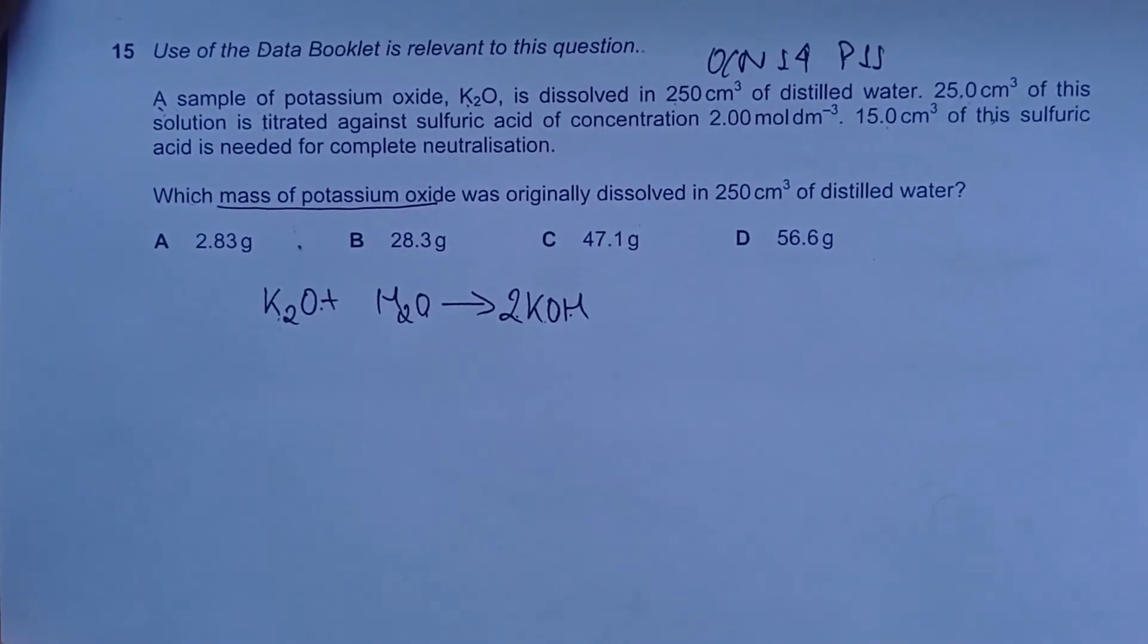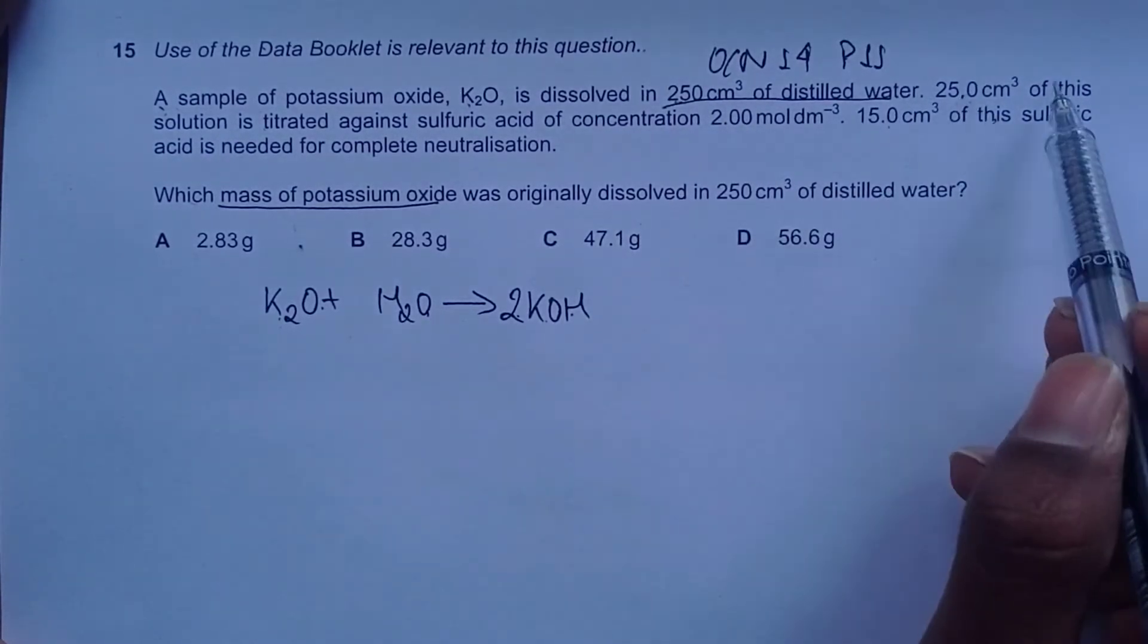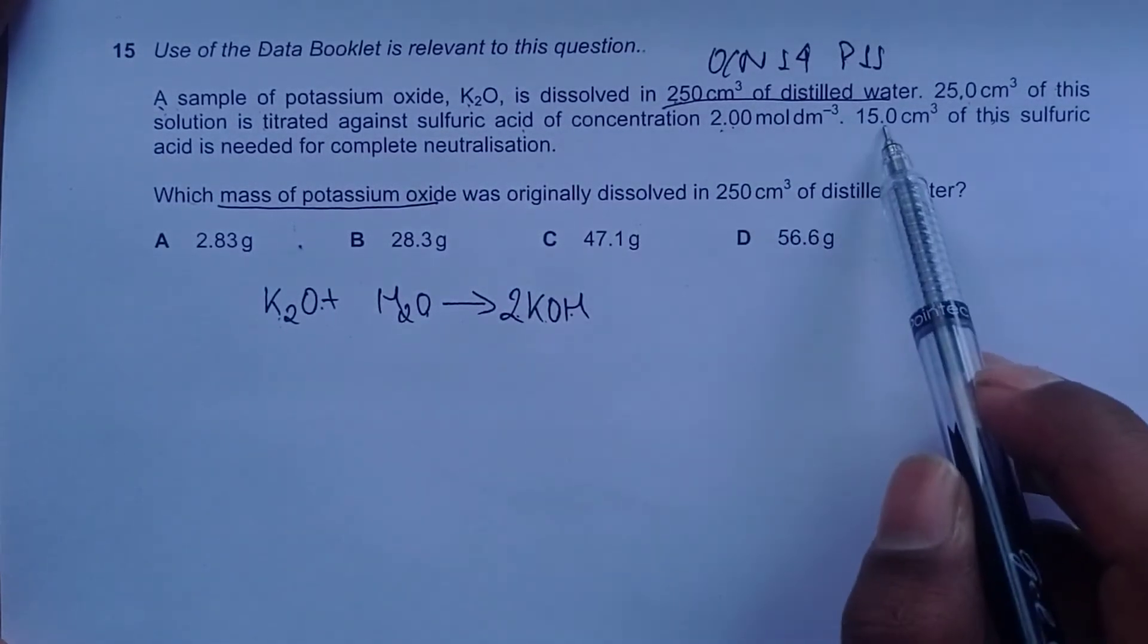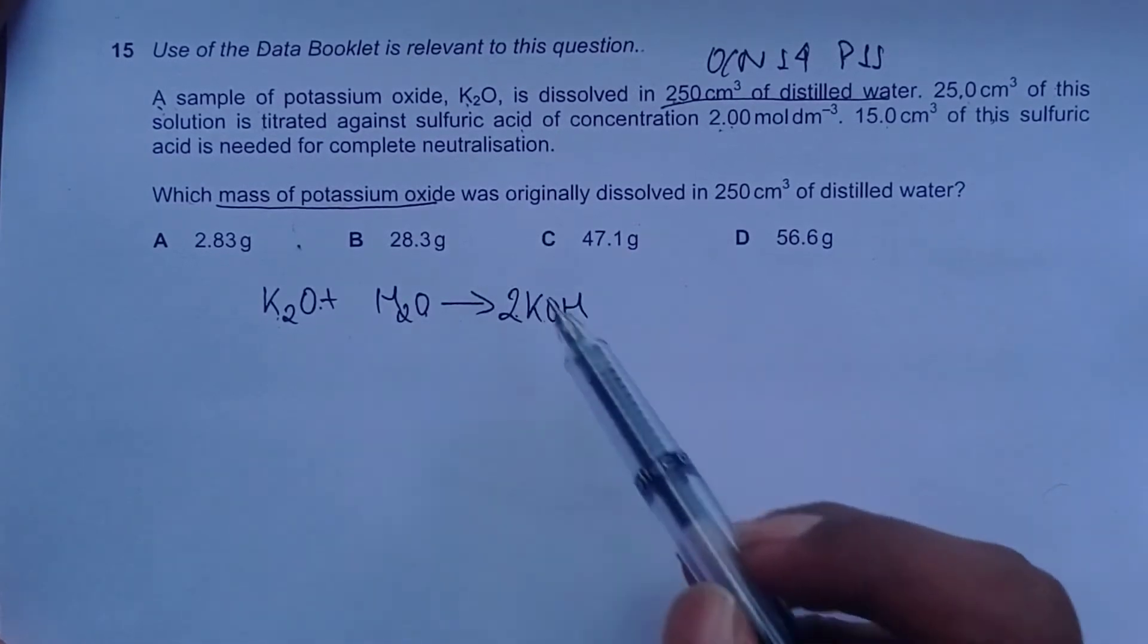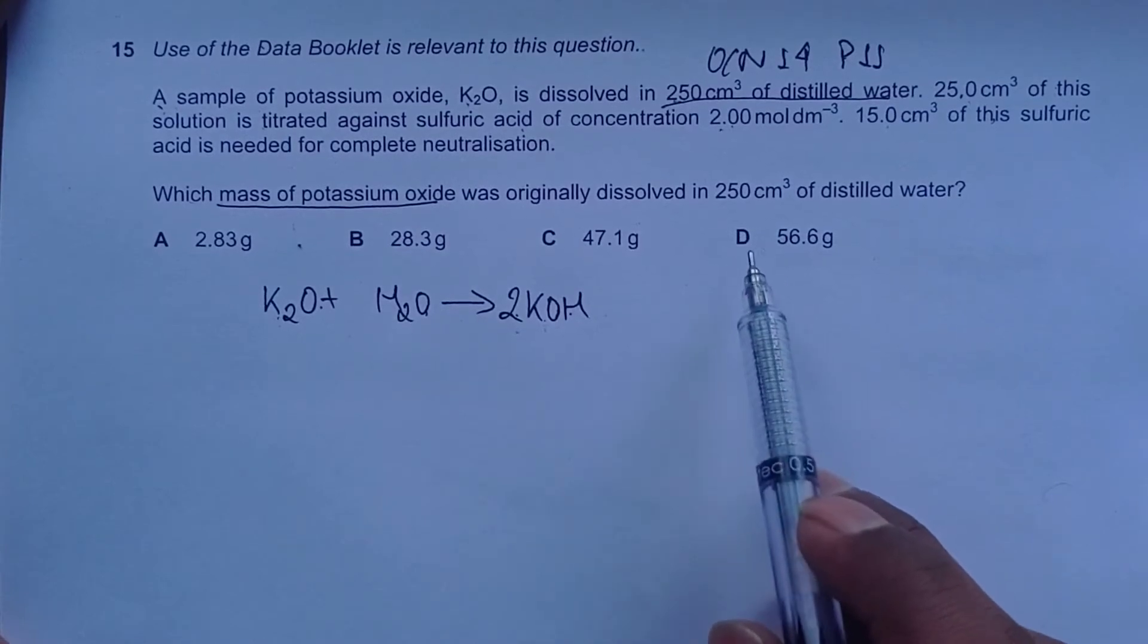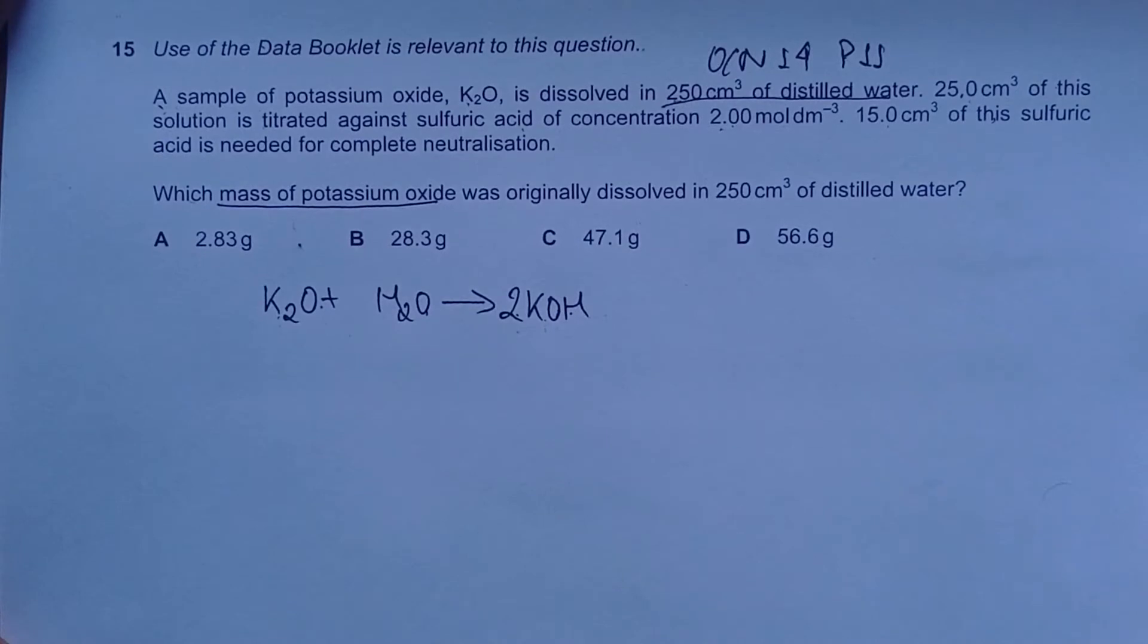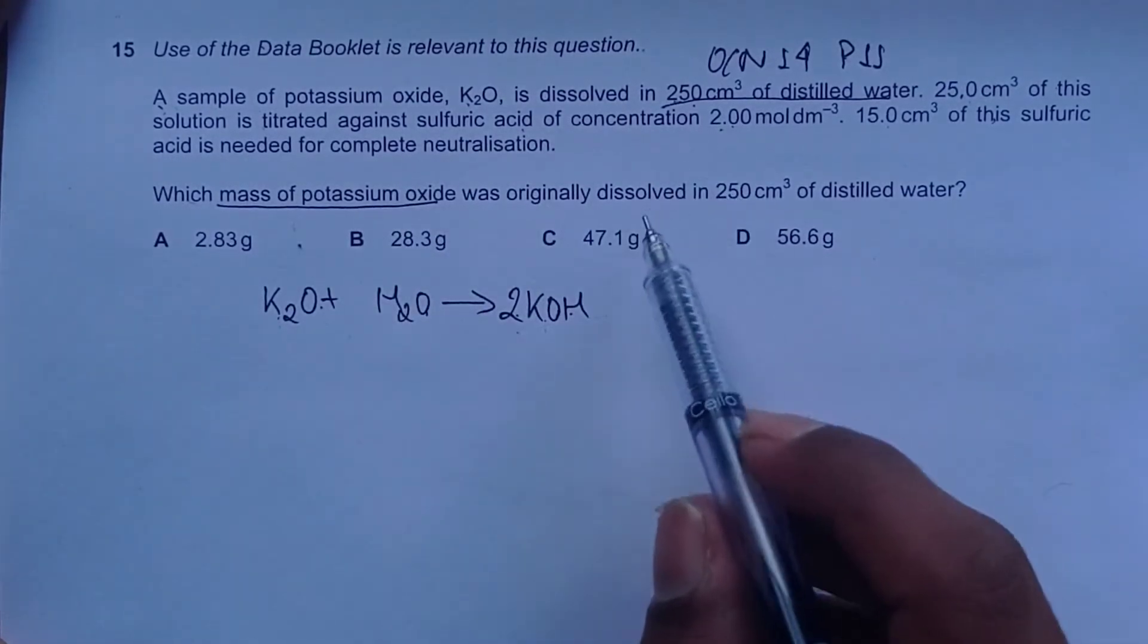From 250 cm³ of distilled water, 25 cm³ of solution is titrated against sulfuric acid of concentration 2 mole per dm³. 15 cm³ of sulfuric acid is used. That means sulfuric acid is in the burette and 25 cm³ of potassium hydroxide is in the conical flask. It's helpful to visualize what's going on in this reaction.